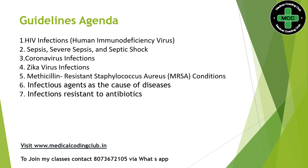We have coding guidelines for HIV infections, then sepsis, severe sepsis and septic shock with organ dysfunction, coronavirus infection, Zika virus infection, methicillin-resistant staphylococcus aureus guidelines, infectious agents as a cause of disease, and infectious resistance to antibiotics. The prominent guidelines are HIV infections and sepsis guidelines.